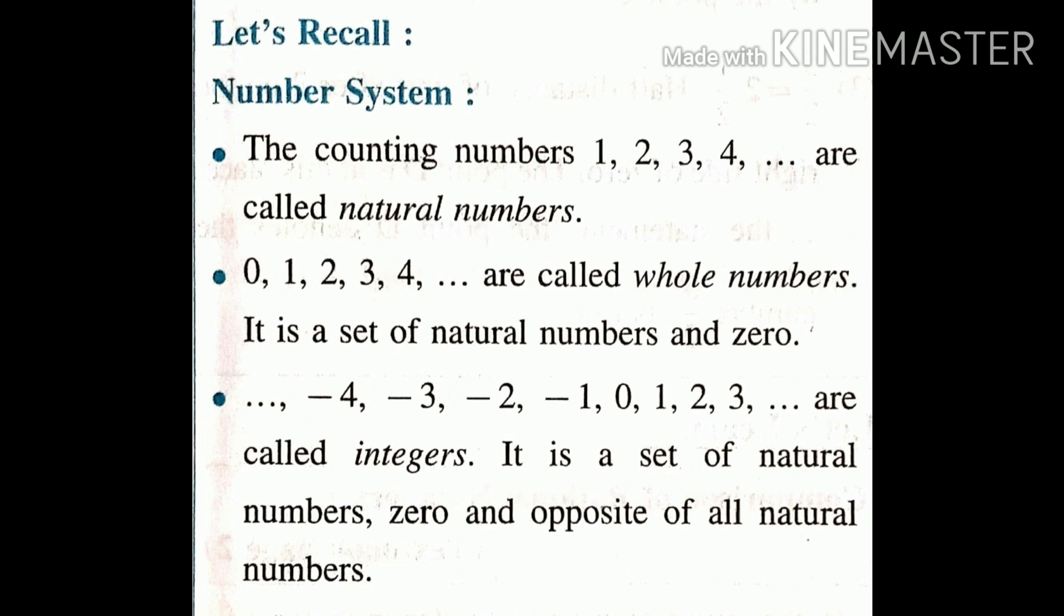And the next type is integers. All negative numbers up to infinity, 0, and all positive numbers up to infinity. This set is known as integers. It is a set of natural numbers, 0, and opposite of all natural numbers.